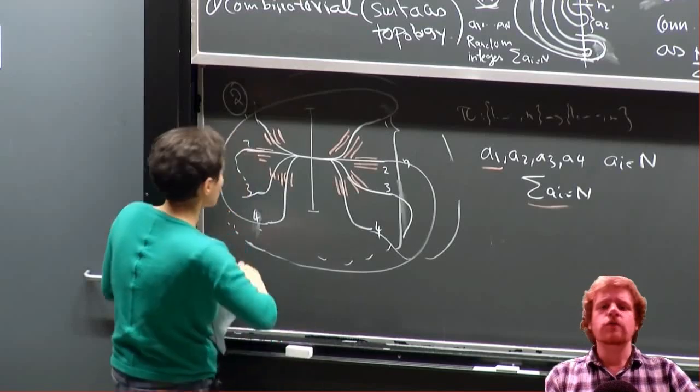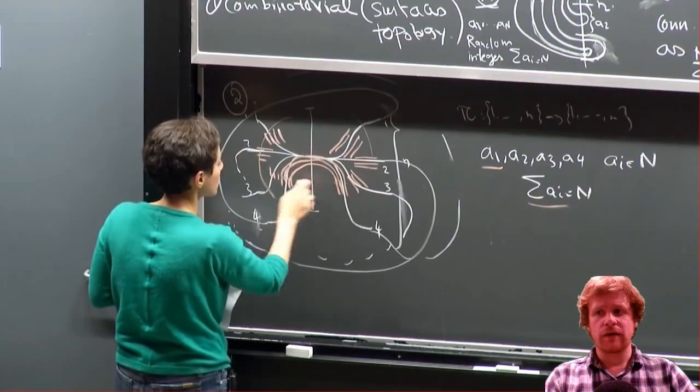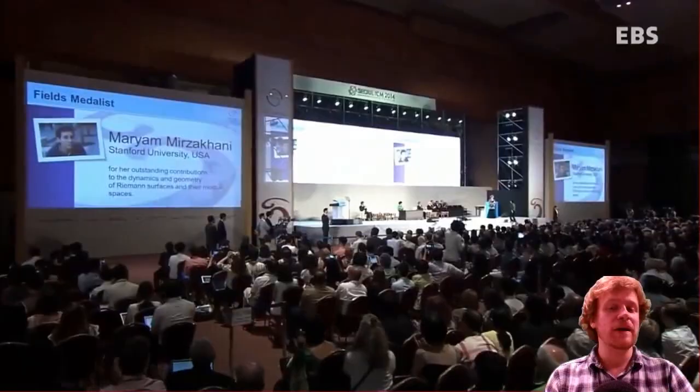As of this week, July 2018, it has been one year since the death of this woman, Maryam Mirzakhani. Maryam Mirzakhani, as you probably know, was the first woman ever to win the Fields Medal, the Nobel Prize of Mathematics.